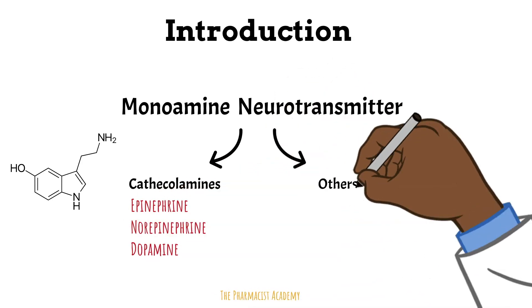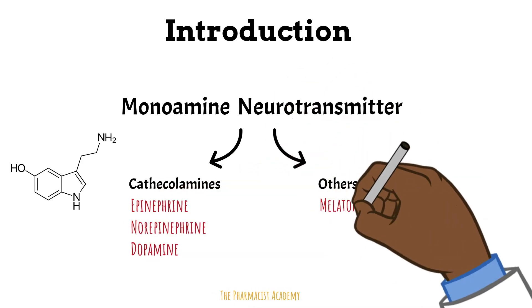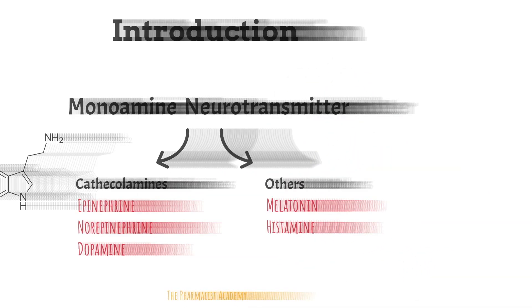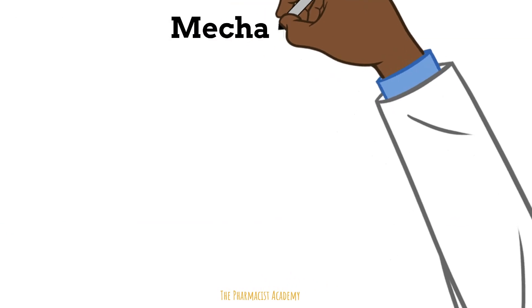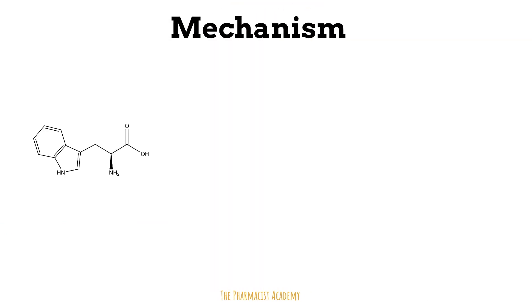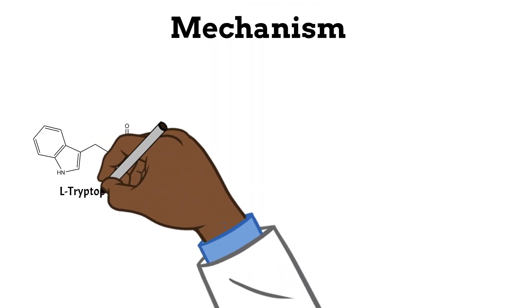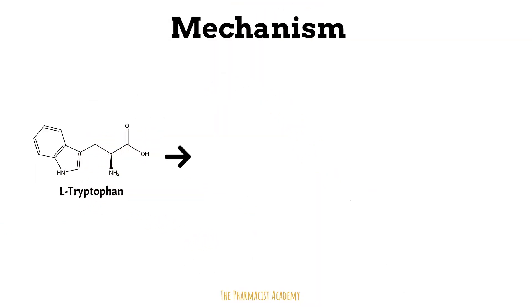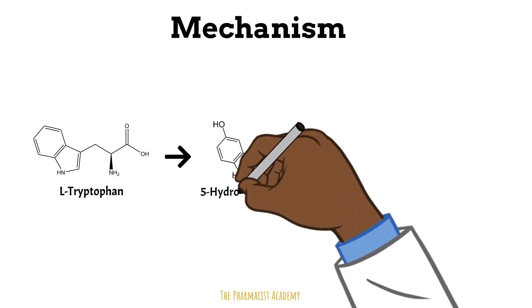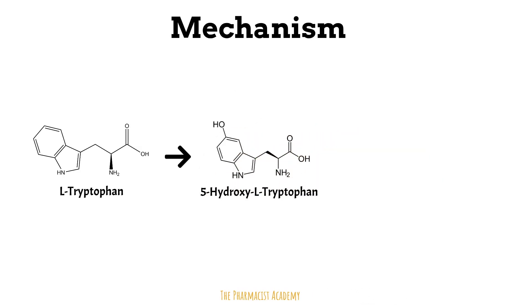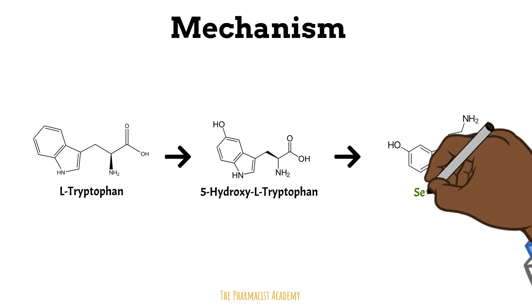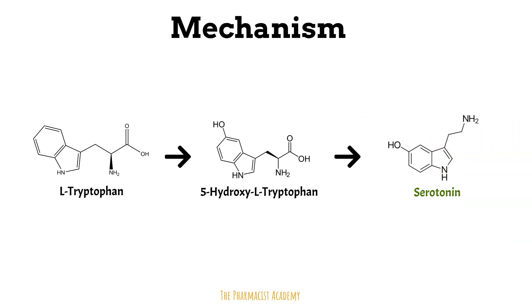There are other monoamine neurotransmitters as well, such as melatonin and histamine. Serotonin is derived from an amino acid — specifically tryptophan, which is found in foods — and then gets converted into 5-hydroxy-L-tryptophan, and finally into serotonin.